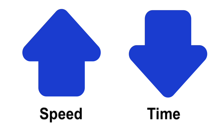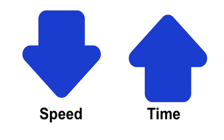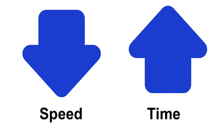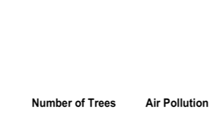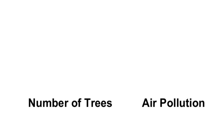Speed and time are inversely proportional to each other, which means that if a car moves at a faster speed, it takes less time to get to its destination. On the other hand, if a car moves at a slower speed, it takes more time to get to the same destination. That makes speed and time inversely proportional to each other.